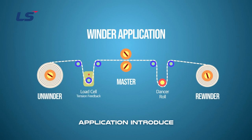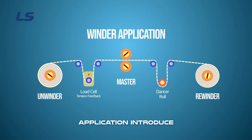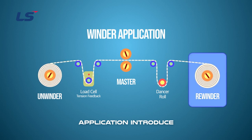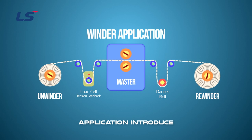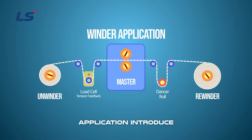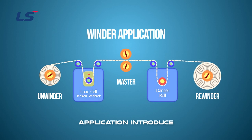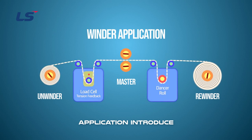Let's look at the composition of the winder. The unwinder releases the ingredients, and the winder winds up the ingredients. There is a master part that is the standard for the speed of the winder and unwinder. Load cells or dancer devices are used to maintain the tension of the material and receive feedback.